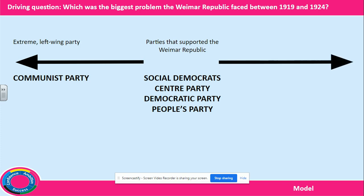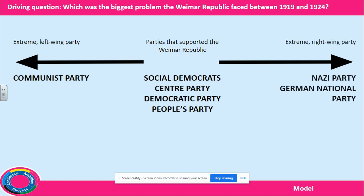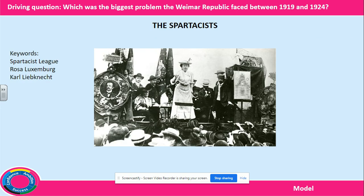Finally, on the right wing of politics were the Nazi Party, who believed that Germany should have one strong leader. They wanted to ignore the Treaty of Versailles and build a strong army. There were also some army generals who served the Kaiser and did not like the new democratic system of government. Within these groups, on the extreme left and right, were people who wanted to overthrow the government by force, if necessary.